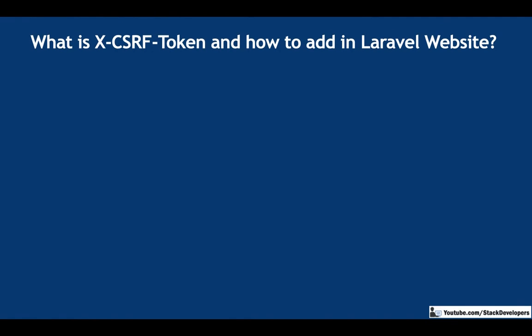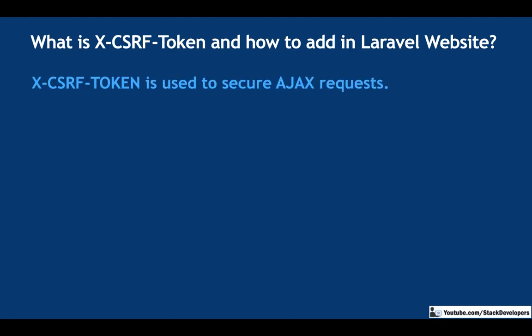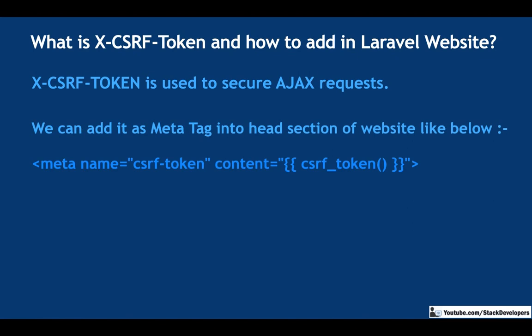The next question: what is the X-CSRF token and how to add it in a Laravel website? This is another form of CSRF token. Most students and developers don't know about this token, but they are already using it. The X-CSRF token is used to secure AJAX requests. We often need to use AJAX in any Laravel website, and for securing AJAX requests we need to use the X-CSRF token. There is a meta tag that we need to apply to prevent AJAX errors.